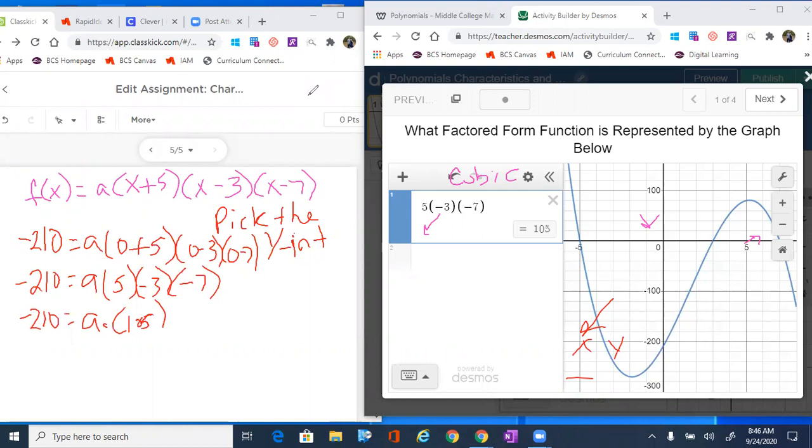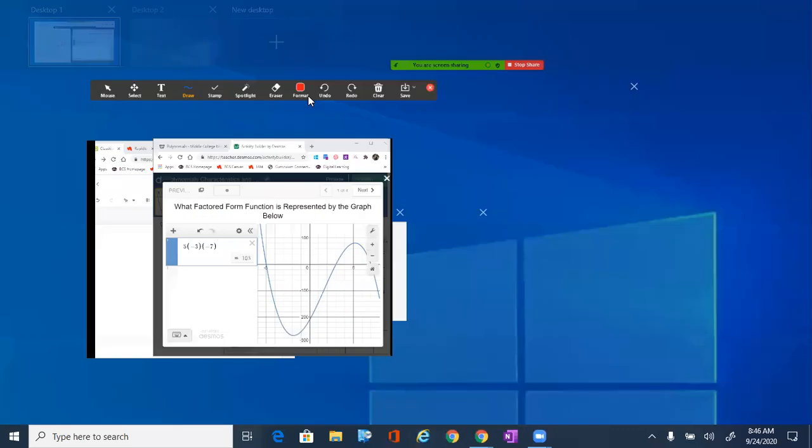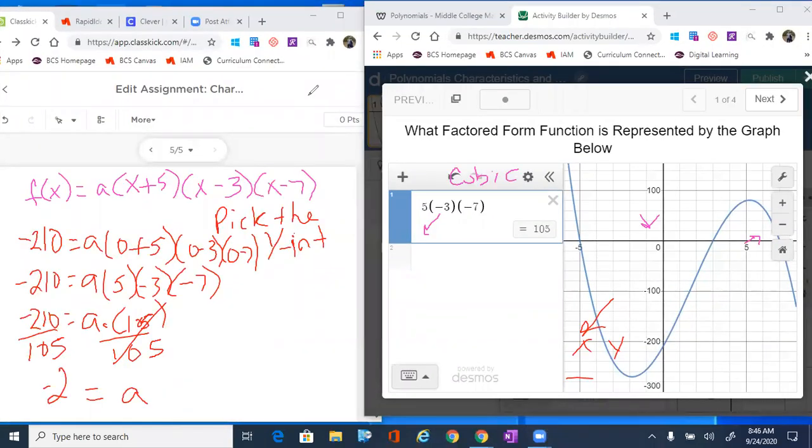And then what we're gonna do is take that information, we're gonna divide off that 105. That cancels, a comes out, and we get negative 210 divided by 105, which I know is gonna be negative two. So we get a equals to negative two.